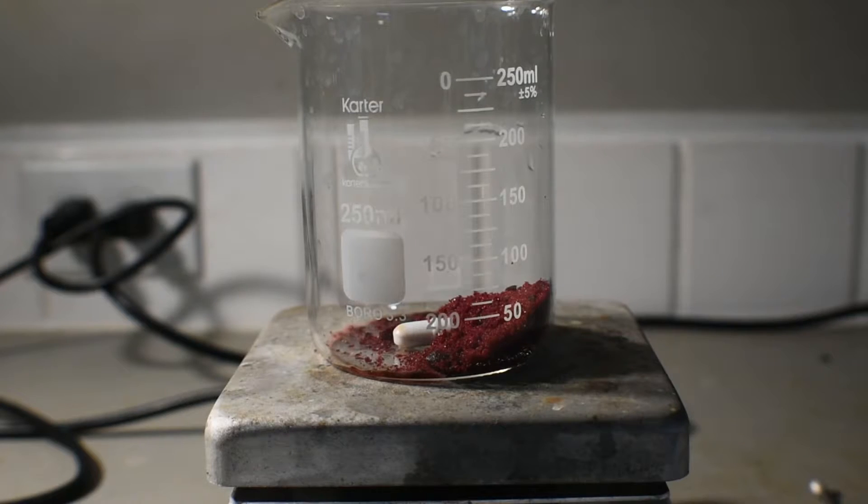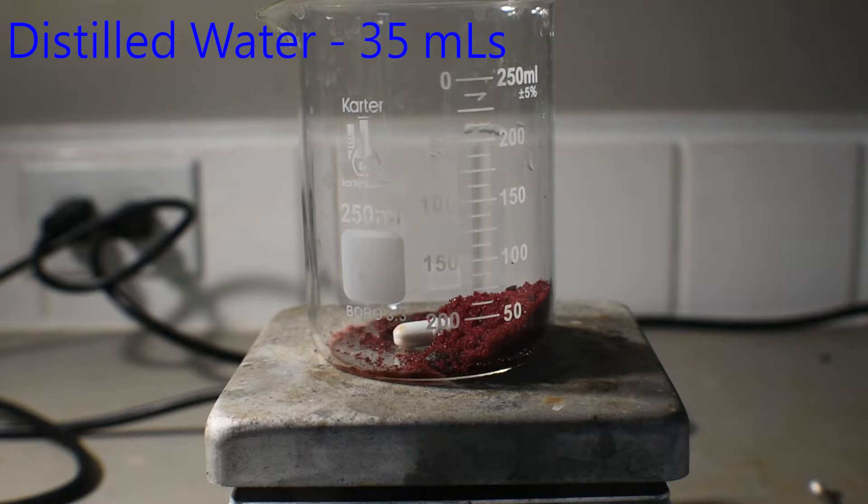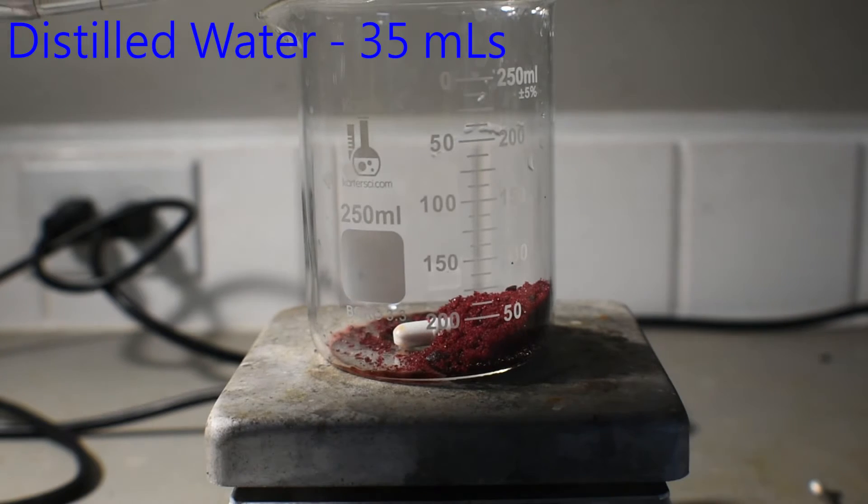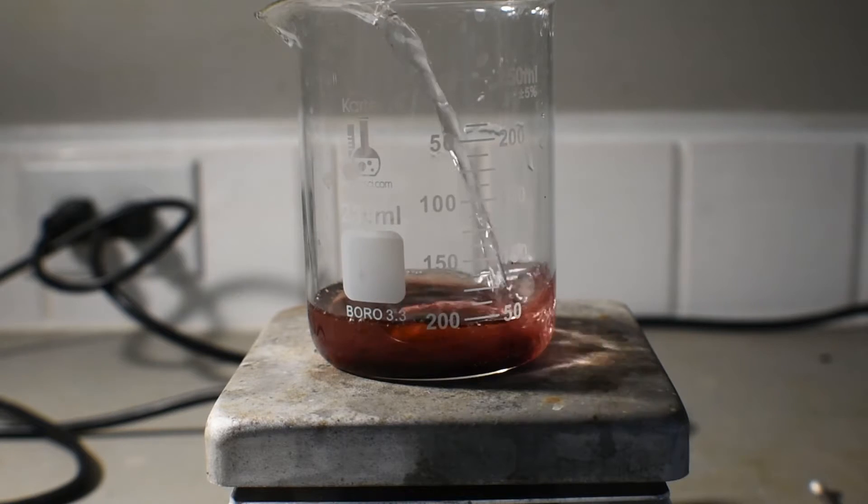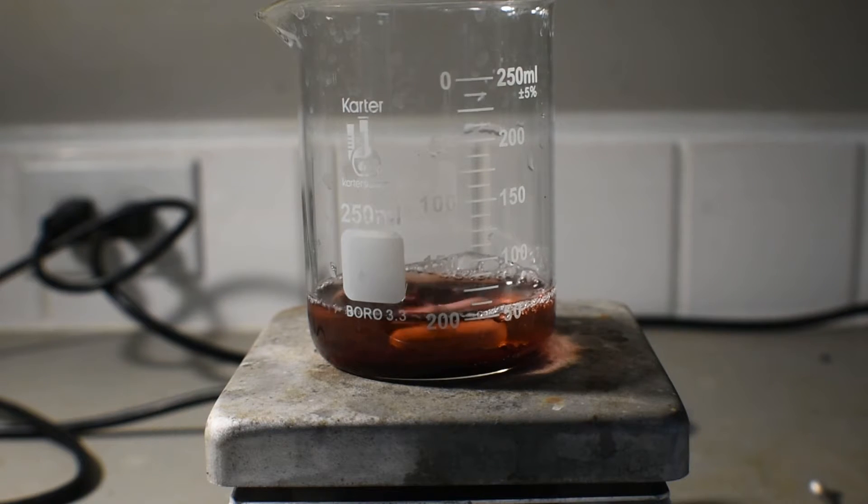This is then followed by 35 milliliters of room temperature distilled water. The cobalt salt will dissolve shortly with stirring.